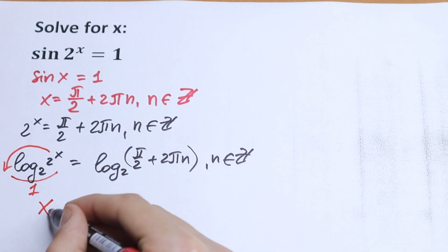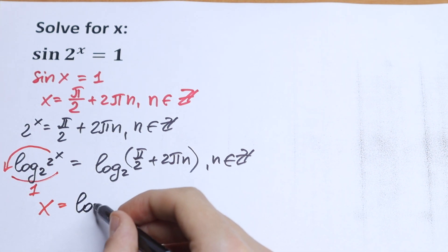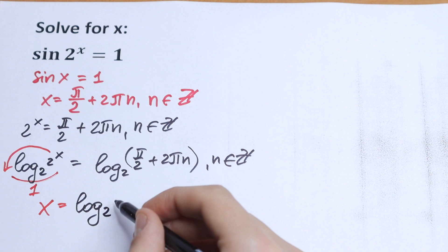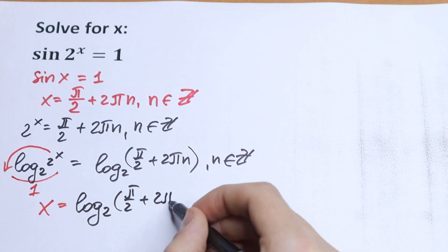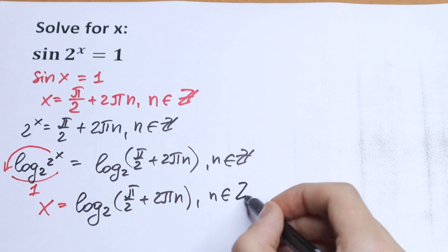So as a result, we will have that our x equals... let's write the same: log base 2 of (π/2 + 2πn), n ∈ Z.